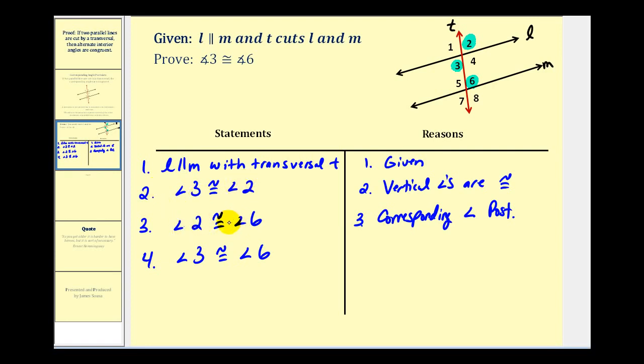If we would have listed step 3 as angle 6 is congruent to angle 2, we would have had to apply the symmetric property to reverse the order in order to apply the transitive property.